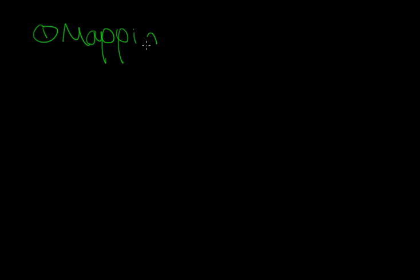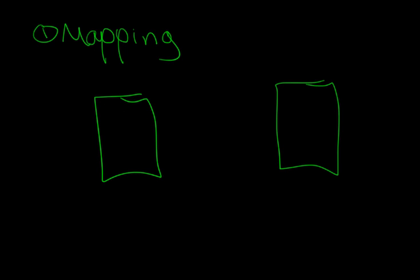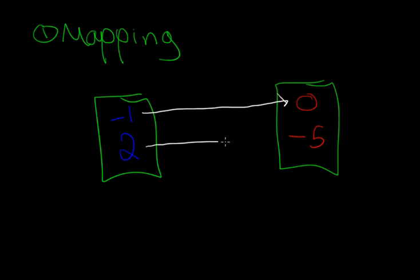The first way to represent a function is through what's called mapping. That's when you're given a list of inputs and a list of outputs that correspond to those inputs. For example, let's say we input negative one and two, and the function outputs zero and negative five. When negative one is input it yields zero, and when two is input the function produces negative five.